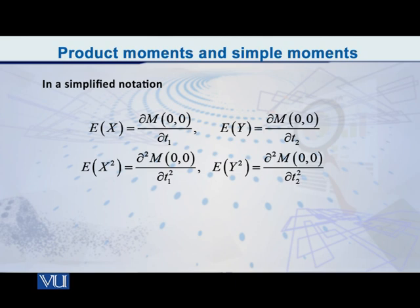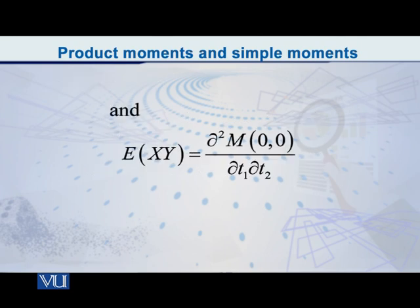Now, let us consider the product moment. If I am interested in obtaining the expected value of x, y, meaning x raised to 1 into y raised to 1, this type of moment is called a product moment. You can also have E of x square into y square and other combinations, but for now, I will just focus first only on E of x, y, expected value of x, y, which is in fact a very important product moment. Why? I will tell you in a short while.